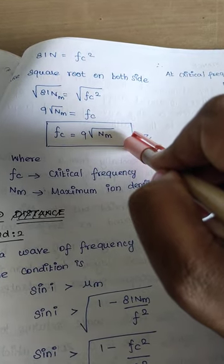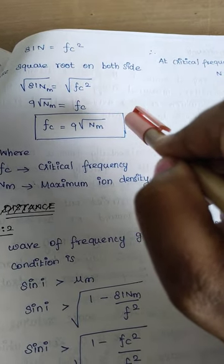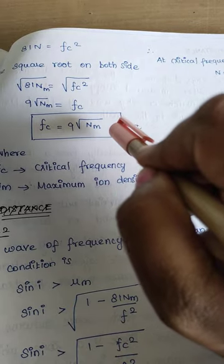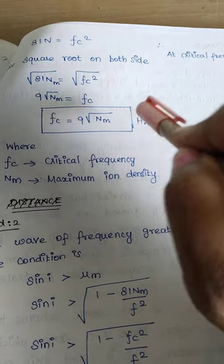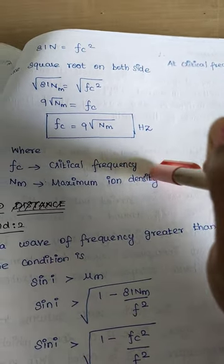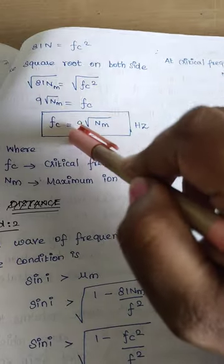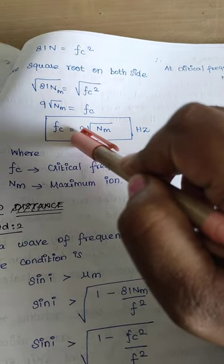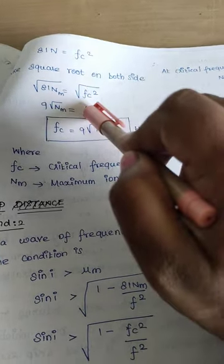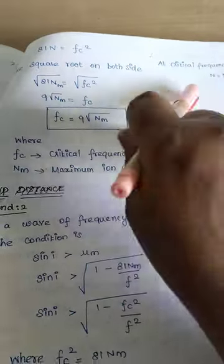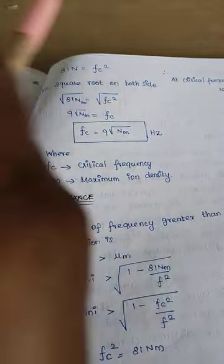In university exams, they will ask you to find the critical frequency given the maximum ion density value. From that, you simply substitute into the expression fc = 9√nm and calculate the critical frequency.